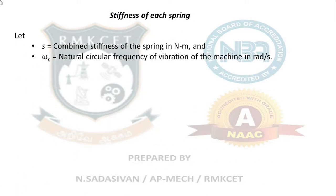For stiffness of each spring, first I am going to find out combined stiffness. Let s equal combined stiffness of the springs in Newton per meter, and omega_n equal natural circular frequency of vibration of the machine in radians per second. We know that transmissibility ratio epsilon equals 1 over [(ω/ω_n)² - 1]. Since there is negligible damping, that is why I am taking this formula.